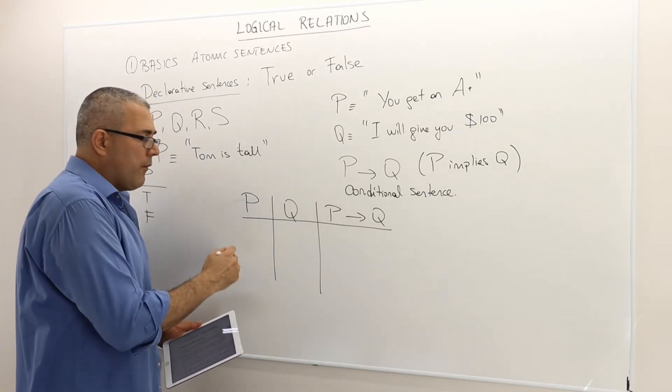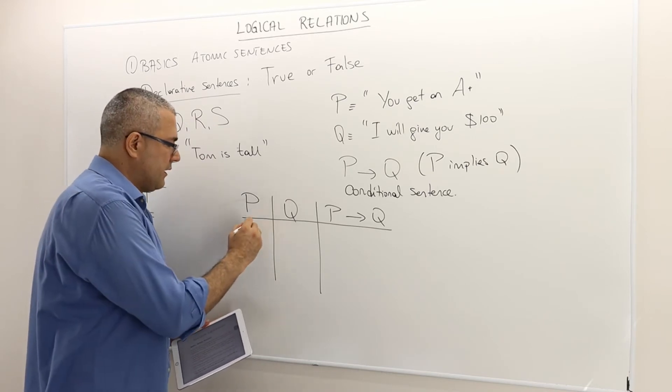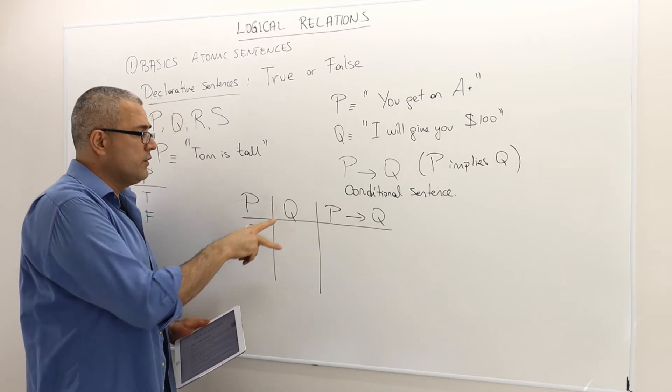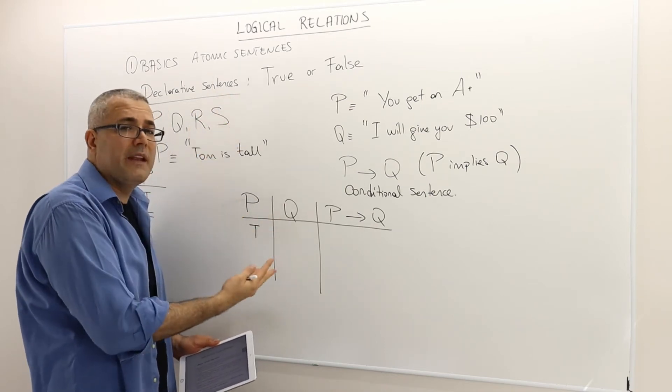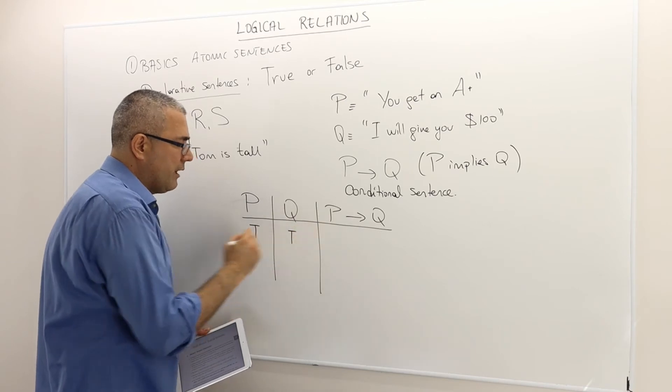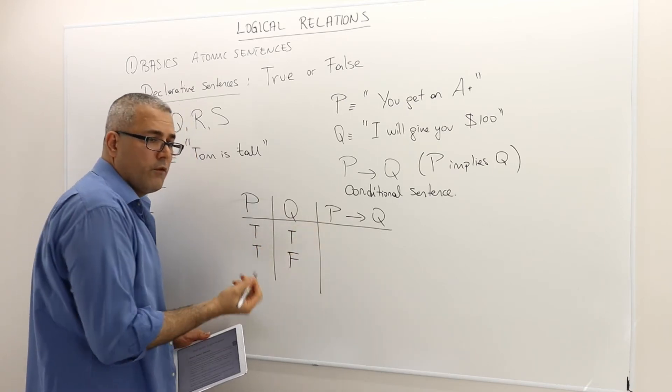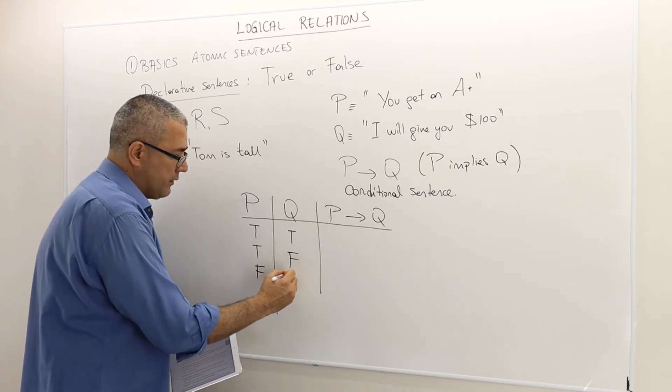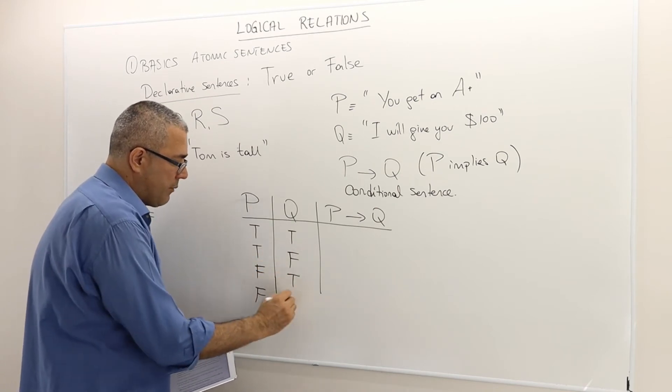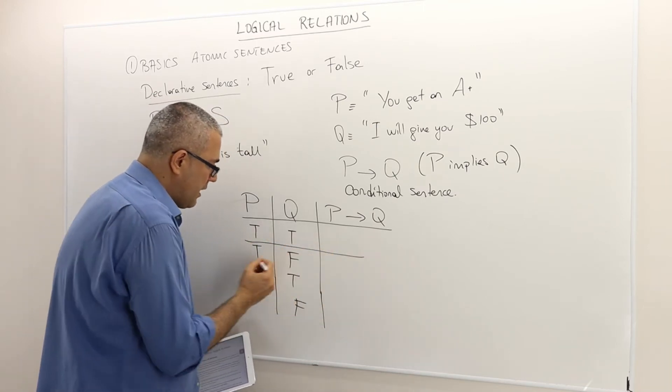So how many cases do I need to analyze? Well, there are four cases. P can take two values, Q can take two values, so 2 to the power of 2, so four possible combinations. They both can be true. P can be true but Q can be false. The other way around, P can be false but Q is true. And then they both might be false.